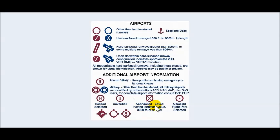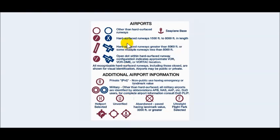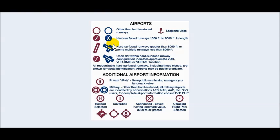If we unfold this chart we're gonna come across a legend which gives us an idea of the information we're looking at on an actual sectional chart. Basically you would have depictions of airports. If this is not a hard surface runway, like a grass field, you have an open circle. If it's a hard surface runway with lengths of 1,500-foot runways to 8,069-foot runways in length, then you would have a circle with the little runway depictions in it.